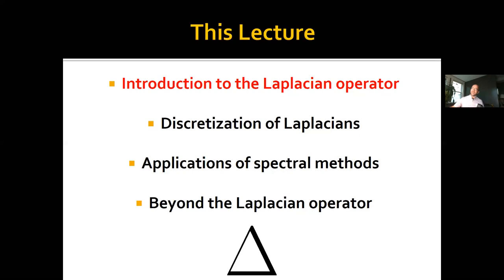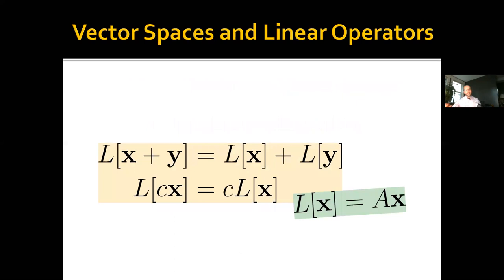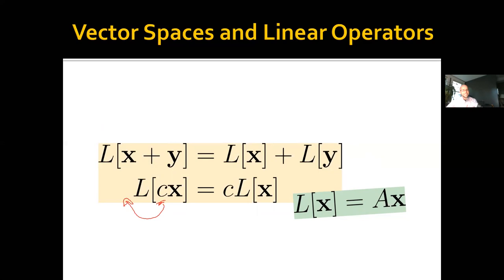First, a little review from linear algebra. A linear operator L satisfies two properties: L applied to the sum of two objects X plus Y equals L(X) plus L(Y), and if I scale an object by some constant c, I can pull that constant outside without affecting the value of L. The canonical example of a linear operator is matrix-vector multiplication: if you have a constant matrix A, then the function taking X to AX certainly satisfies these two properties.